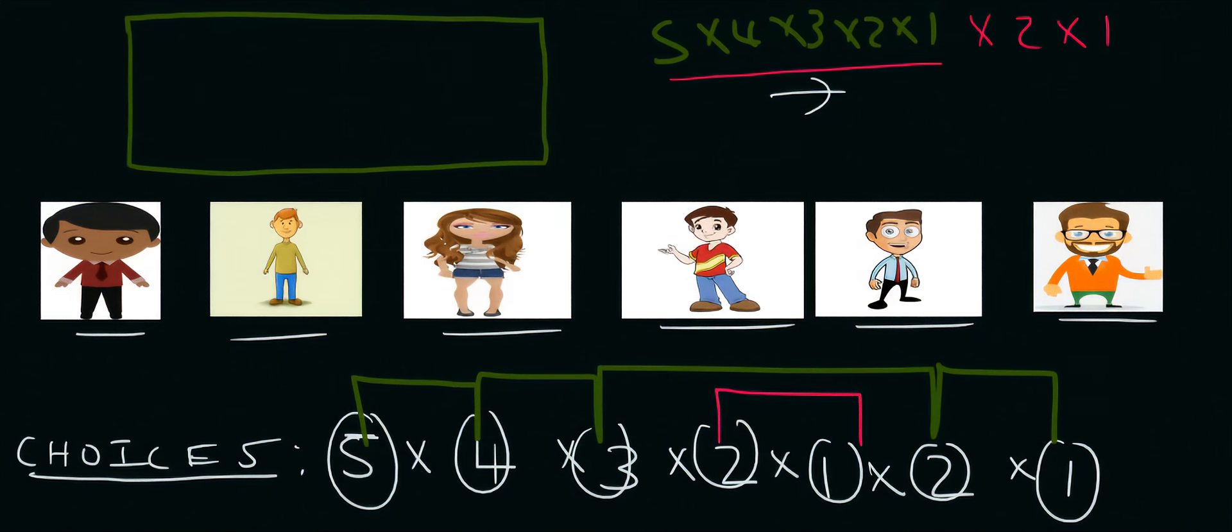So that's times two times one now. I'm going to explain very carefully the five, four, three, two, one. That can be written as five factorial, and then the two times one is the two factorial. So where did that all come from?